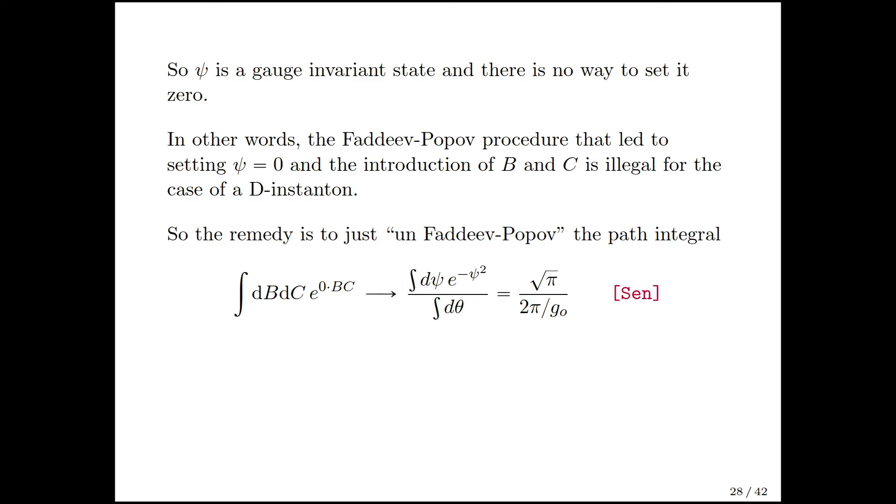The remedy is to just unfaddeev-popov this path integral and get rid of that db, dc, e to the 0 bc and just replace it with this psi integral. The e to the minus psi squared you get from this kinetic term, one-half psi QB psi. But you should remember to divide by the volume of the gauge group. Now, the gauge group here is nothing fancy. Usually you would have a U1 rotation for each point on the worldvolume, but the worldvolume is just a point, so it's a finite group. You need to compute the volume of that group properly, and that gives a factor of the open string coupling in the denominator.